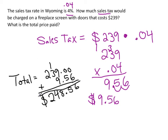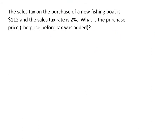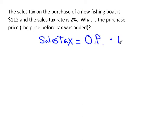Make sure you're specific with your answers — label what is sales tax and what is the total. Now a different type of problem: the sales tax on a fishing boat is $112 and the sales tax rate is 2%. What is the purchase price before tax? Rewriting our formula: sales tax equals original price times tax rate. Sales tax is 112, the rate is 2% or 0.02, and original price is our unknown.